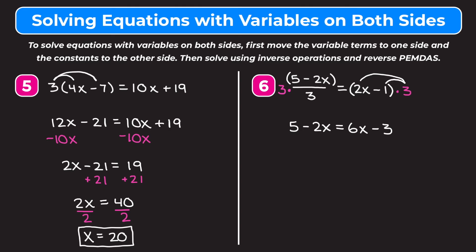So now we have 5 minus 2x equals 6x minus 3, and we need to get the variables to one side and the constants to the other. I'll move the minus 2x from the left by adding 2x to both sides. On the left, the minus 2x and positive 2x go to 0, leaving 5. On the right, 6x plus 2x is 8x, giving me 8x minus 3. Now I add 3 to both sides: 5 plus 3 is 8 on the left, and the minus 3 and plus 3 cancel, leaving 8x.